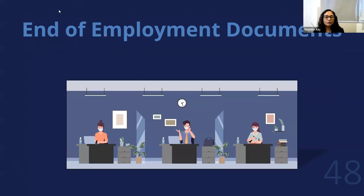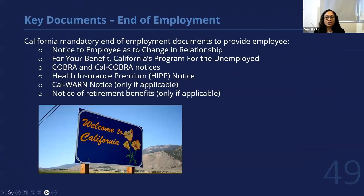Some of the end-of-employment documents you want to make sure you provide to employees: you want to give the employee a notice of change of relationship for any benefits, unemployment insurance information, COBRA notices, health insurance premium notices, and notice of retirement benefits if it applies.